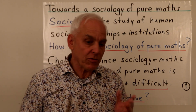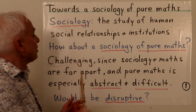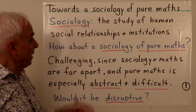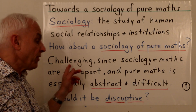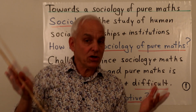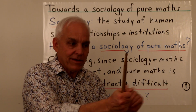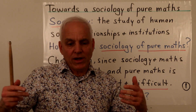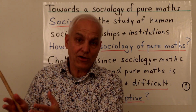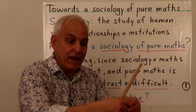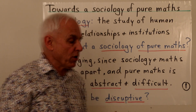Let's start out with a definition of sociology. One source says it is the study of human social relationships and institutions. We're interested in how about a sociology of pure mathematics. This is challenging because maths and sociology are quite far apart. Maths is very abstract and difficult, and it's not easy for someone to have enough understanding of mathematics and also skill in sociology to uncover the social mechanisms working inside it.